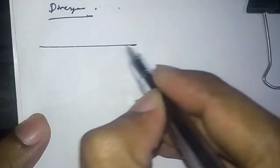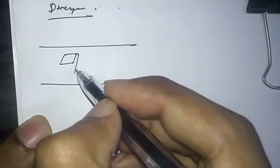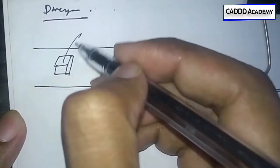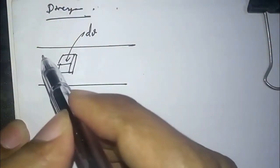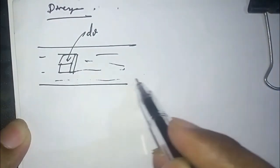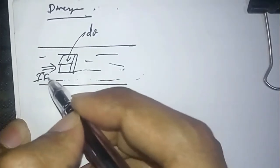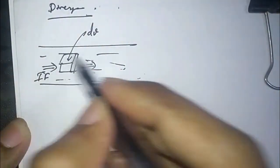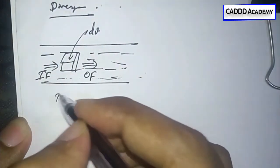To understand divergence, let's say we have a pipe and some cubes. This cube has a volume of dv, and liquid is flowing in the pipe. When inflow is equal to outflow, the flow is constant.